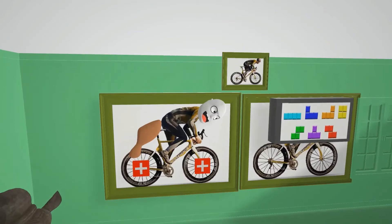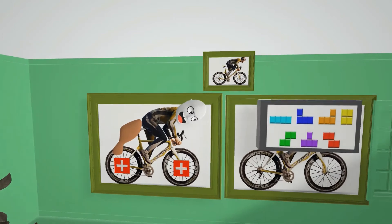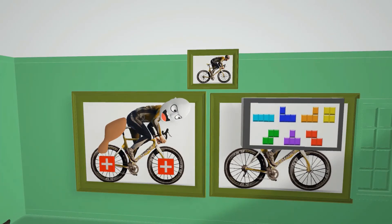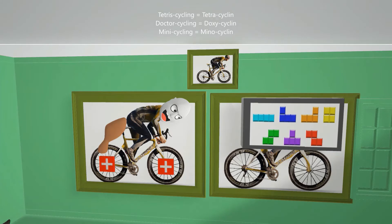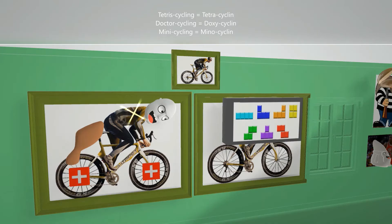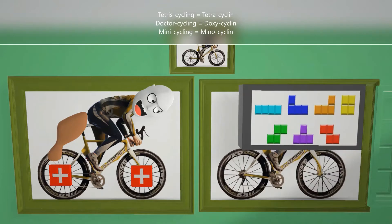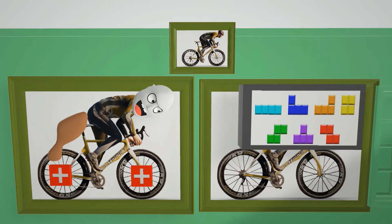Let's begin with what the tetracyclines are. Here we see these posters that remind us of the tetracyclines. These include tetracycline, represented by Tetris on top of the cycle. Here there's the doctor cycling for doxycycline, and then there's the miniature cycle guy for minocycline. Tetracycline, doxycycline, and minocycline are the important tetracyclines to be aware of.